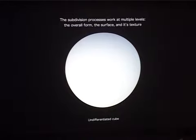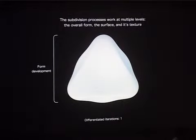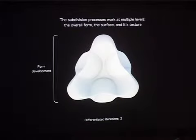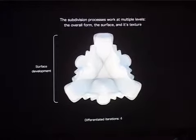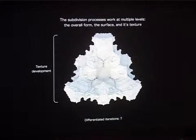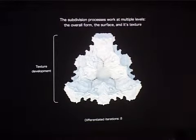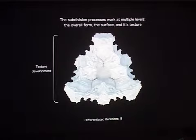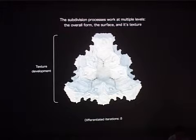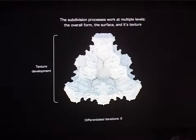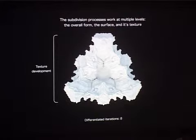An interesting thing about these subdivision processes is that they work at different levels. In the first iteration they define what the overall form looks like. The further you go, the more it describes the surface development at iterations five and six. Until we get to a point where we're really talking about a texture, a microsurface developing on top of it. So it's the same process working at multiple scales. The question is: do these processes allow an ornament to grow on top of an existing form? Or are they more involved in what the shape of an ornament is from the start? What I'm showing here on the left are some of the weights I'm changing, and on the right you can see how the cube develops as one changes them.